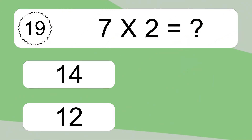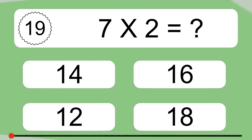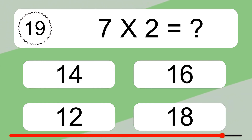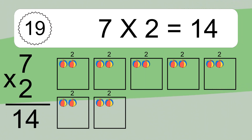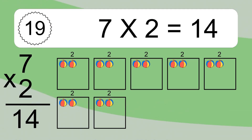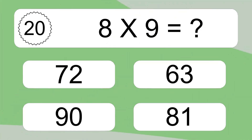7 times 2 equals what? 7 times 2 equals 14. We have 7 boxes and each box has 2 colorful balls inside. If you count all the balls in all the boxes together, you will have 7 times 2 balls. This equals 14 balls. 8 times 9 equals what?